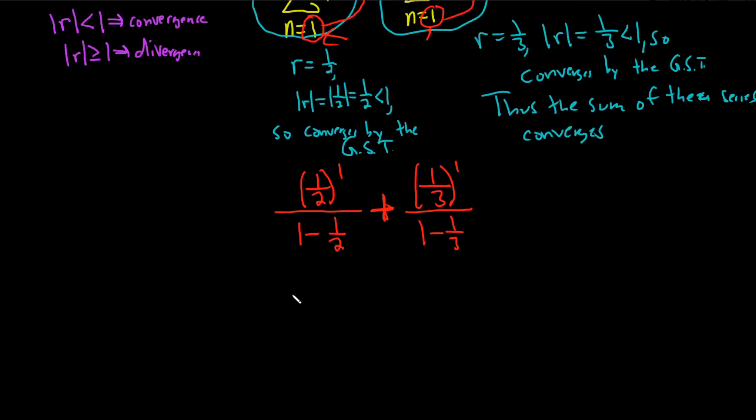Let's clean this up. This is 1 half over, and then 1 minus 1 half is also 1 half, plus 1 third over 1 minus 1 third. Think of 1 as 3 thirds, so it's really 3 thirds minus 1 third, so it's 2 thirds.